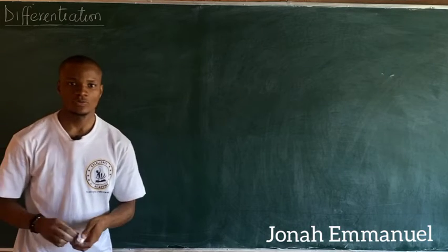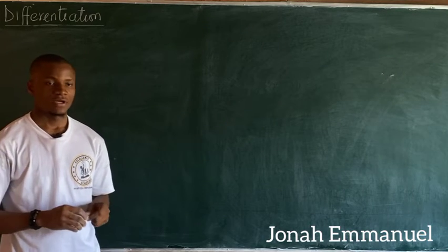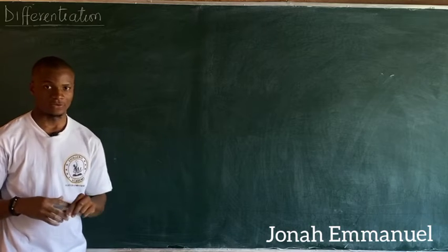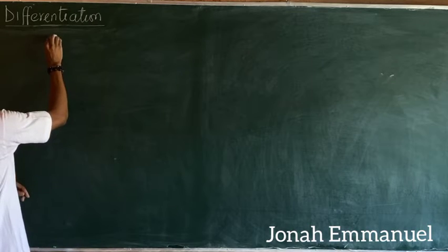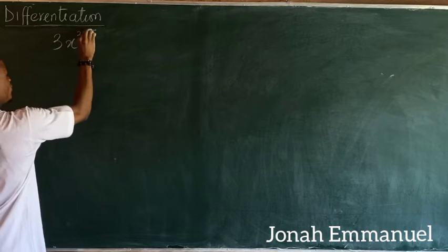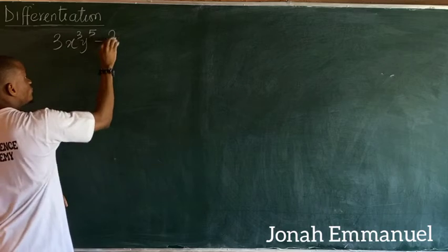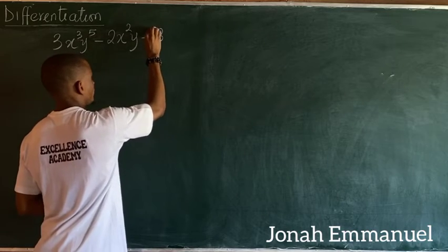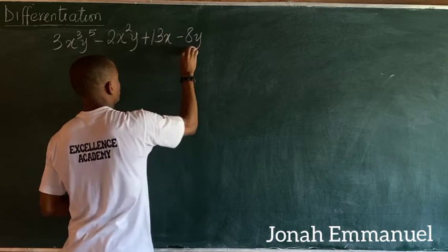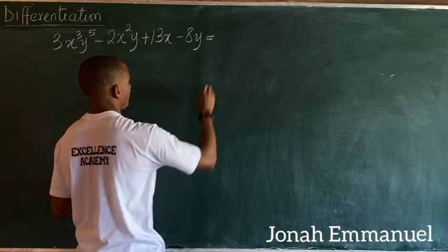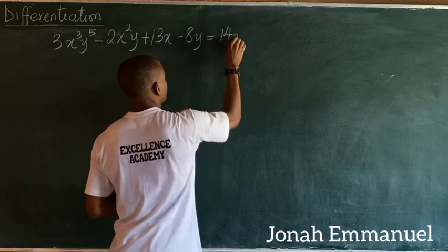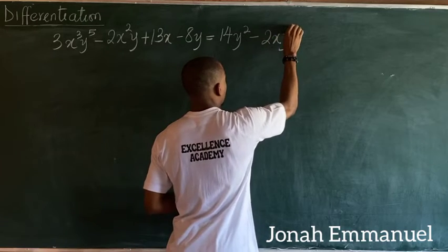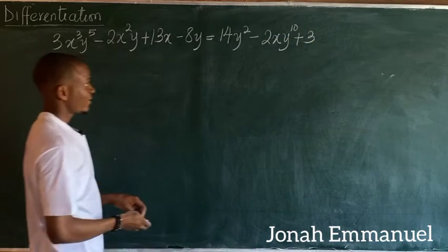Hello and welcome to Excellence Academy. Let's look at a second problem on differentiation via implicit method. The equation is: 3x³y⁵ minus 2x²y plus 13x minus 8y equals 14y² minus 2xy¹⁰ plus 3.